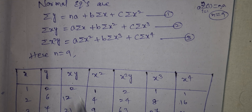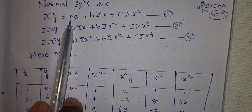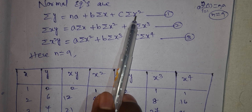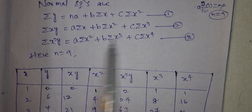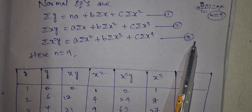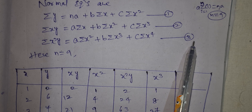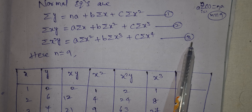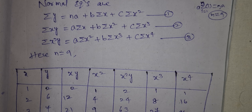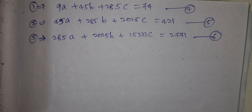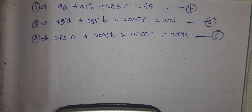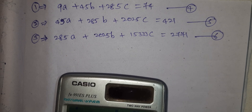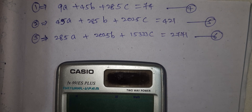Now we will substitute the values. N equals 9. We substitute into equation 1, equation 2, and equation 3. We get three equations with unknowns a, b, and c. We will take equations 4, 5, and 6 to solve.